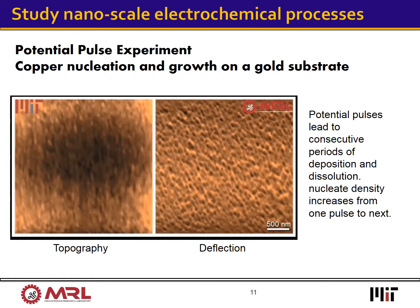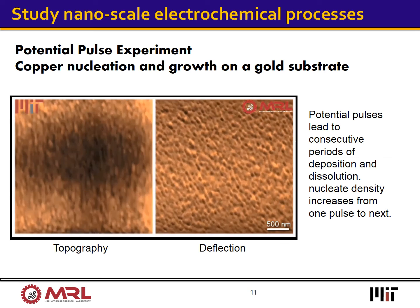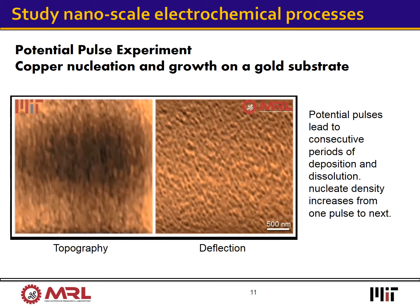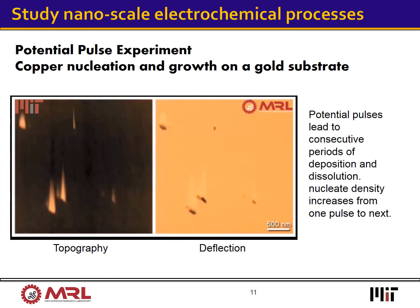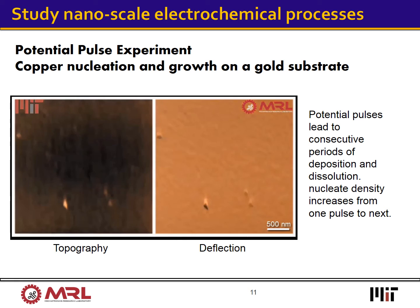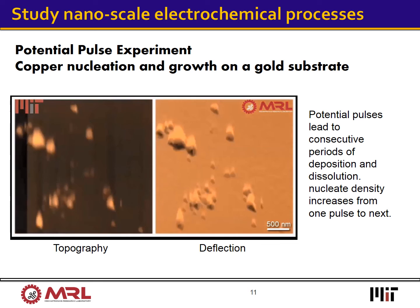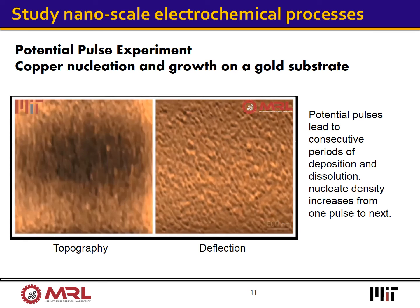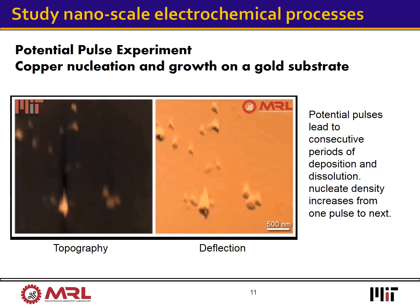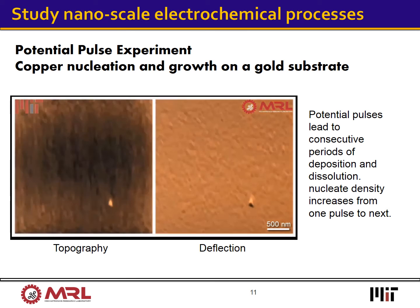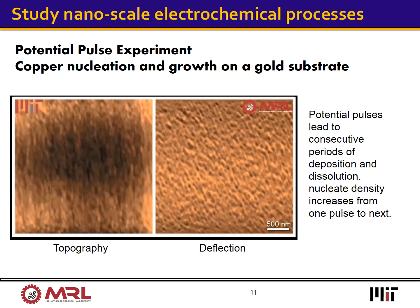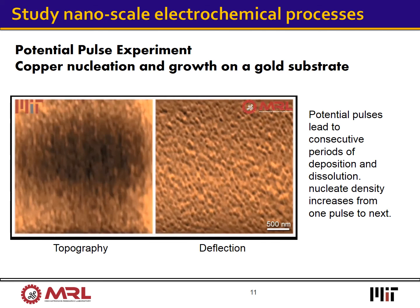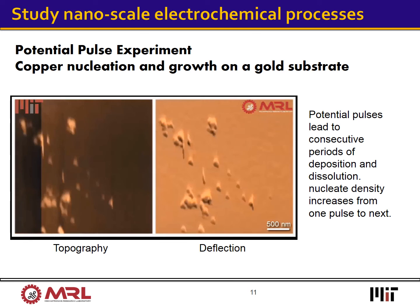In another experiment, we visualized the nucleation and growth of copper on a gold substrate in a solution of copper chloride. Throughout the experiment, we applied voltage pulses to activate periods of electrodeposition followed by dissolution. A peculiarity observed from the video is that the density of nucleation sites increases from one pulse to the next. While on the very first pulse only a couple of nucleates appear on the sample surface, by the last voltage pulse almost all the surface is covered. Videos like this will help us improve electrodeposition quality in various industries such as microelectronics. Another important application of similar studies is in battery research — for example, to understand the underlying parameters that influence dendrite growth, a leading cause of battery failure in lithium batteries.